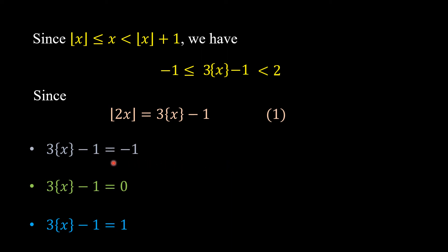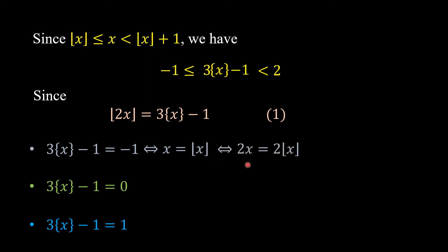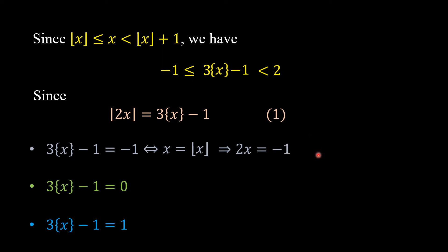For the first case, where the right-hand side equals -1: this is equivalent to {x} = 0, which means x is an integer, so floor(x) = x. Substituting into the equation, we get 2x = -1, so x = -1/2. But since x must be an integer in this case, this value is not possible. Case 1 yields no solution.